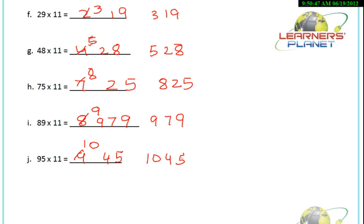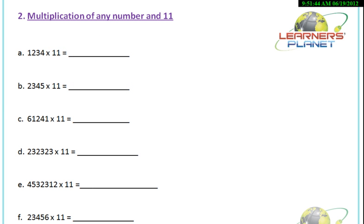You can calculate all these calculations mentally — you just have to practice. Now we try to calculate bigger numbers multiplied by 11. Here we see 1234 into 11. It's very simple; just concentrate and observe the pattern carefully. Write the rightmost digit, the units digit, as it is. Now 3 plus 4 is 7, write 7 here. Then 2 plus 3 is 5, write 5 here. Then 1 plus 2 is 3, write 3 here. And copy 1 as it is. So the answer is 13574.